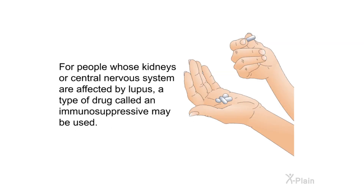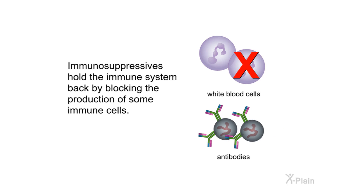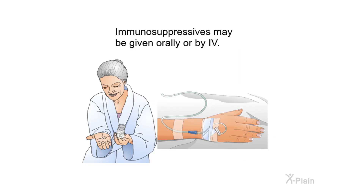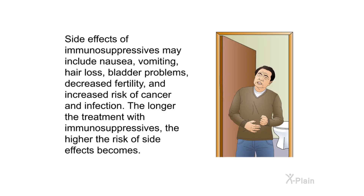For people whose kidneys or central nervous system are affected by lupus, a type of drug called an immunosuppressive may be used. Immunosuppressives hold the immune system back by blocking the production of some immune cells. They may be given orally or by IV. Side effects may include nausea, vomiting, hair loss, bladder problems, decreased fertility, and increased risk of cancer and infection. The longer the treatment, the higher the risk of side effects.